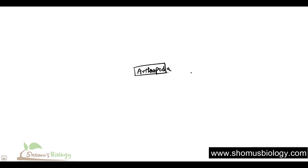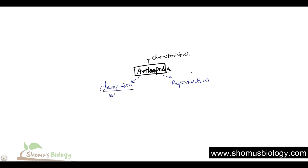So, the very first thing I am going to talk about is characteristics, then I will also talk a little bit about their classification or types, then I will also talk about their reproduction. And obviously, in the classification we will also talk about examples of different arthropods. So, the very first thing is characteristics of arthropods.